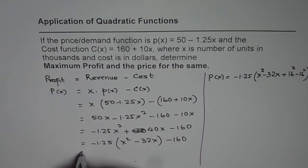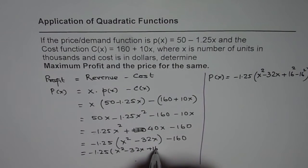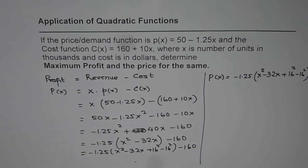We ran out of space, so I'll do it here. Minus 1.25 x squared minus 32x plus 16 squared minus 16 squared minus 160.